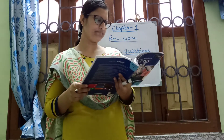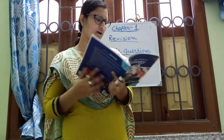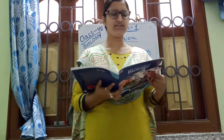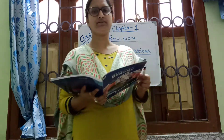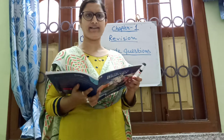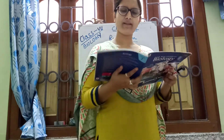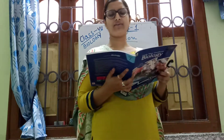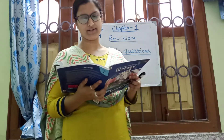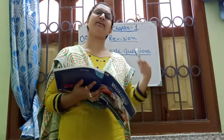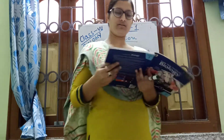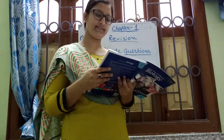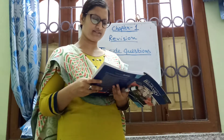Now I am discussing the tissue chapter. There are two types of tissue given in your book: plant tissue and animal tissue. Plant tissue is again divided into meristematic tissue and permanent tissue. Meristematic tissue is further divided into apical, intercalary, and lateral meristematic tissue. Permanent tissue includes simple and complex tissue.